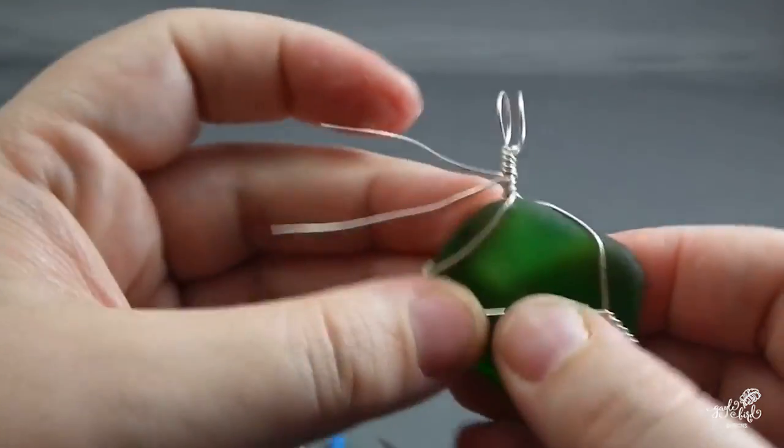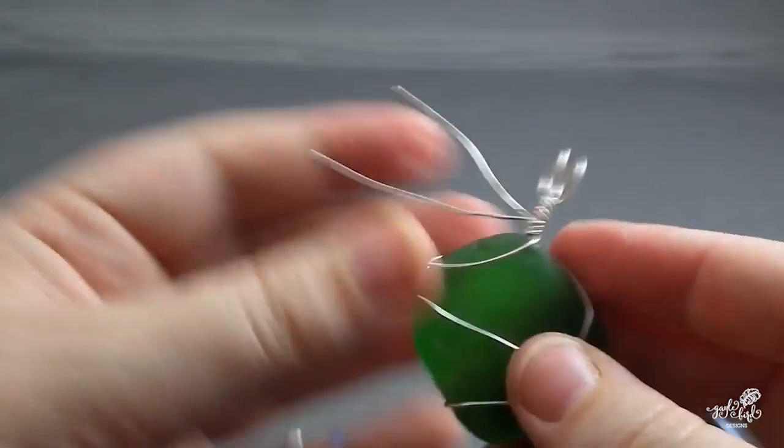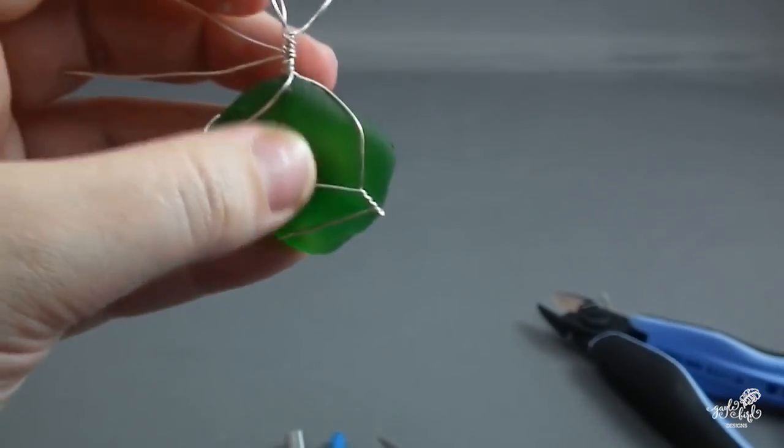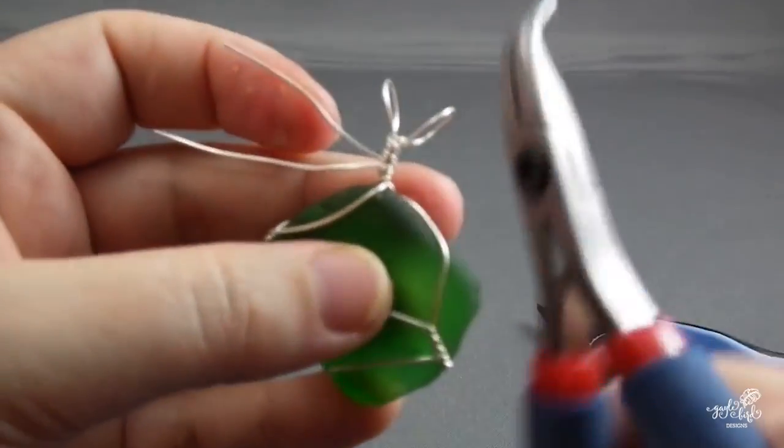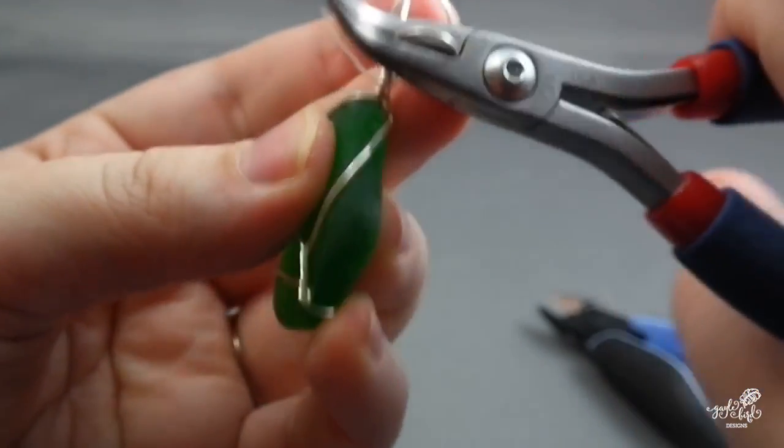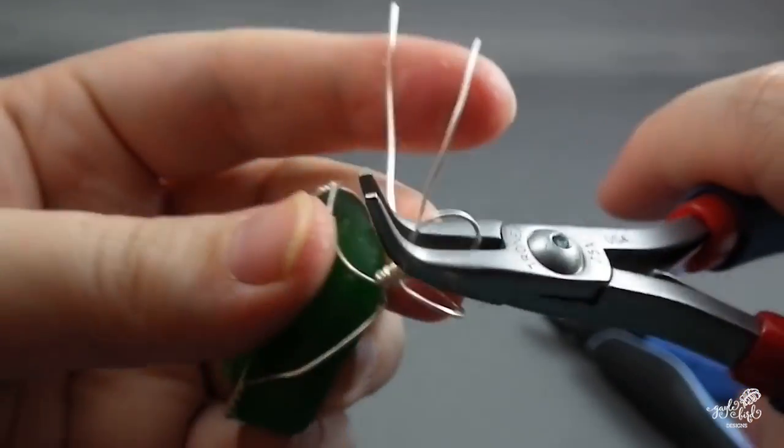Use your fingernails to separate the bail loops to create a pleasing Y shape that will go through a chain really nicely. They're probably a little wobbly, so use the widest part of your flattest pliers to give them a little squeeze along the loop surface, just not very hard, just a little bit.